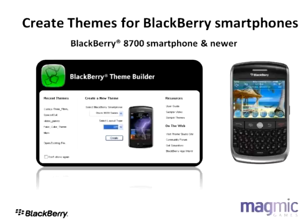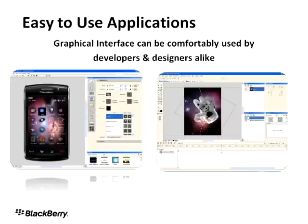In terms of what you can create themes for, this product is very accessible in that it can create themes for almost all BlackBerry smartphones — basically from the 8700 all the way up to the Storm 2 and BlackBerry Bold 9700 — as long as the device is running device software 4.1 or higher. These products are also designed to be very easy to use with a graphical user interface that can be comfortably used whether you're a designer, a developer, or a hobbyist. There's no coding required to create a theme.